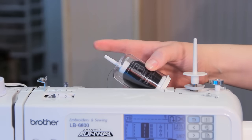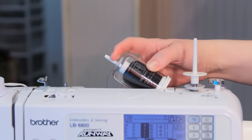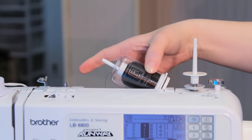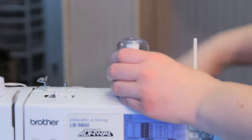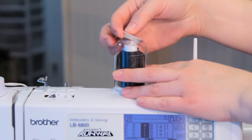But you do not need to put a spool cap on. It'll just feed right like this and you can thread your machine normally. When you're finished, just take it off and put your stopper back on.